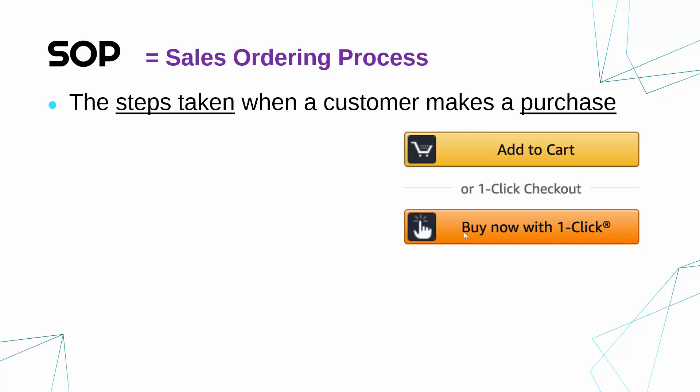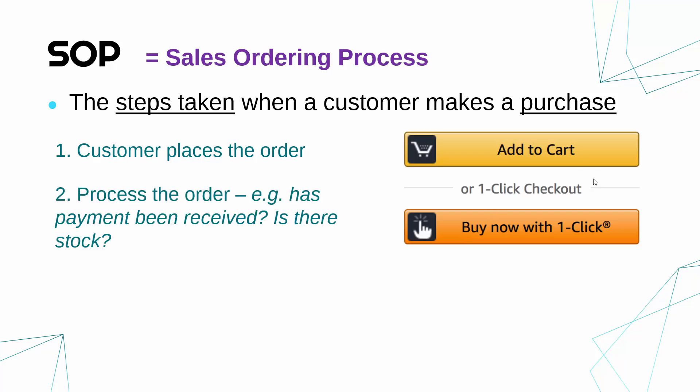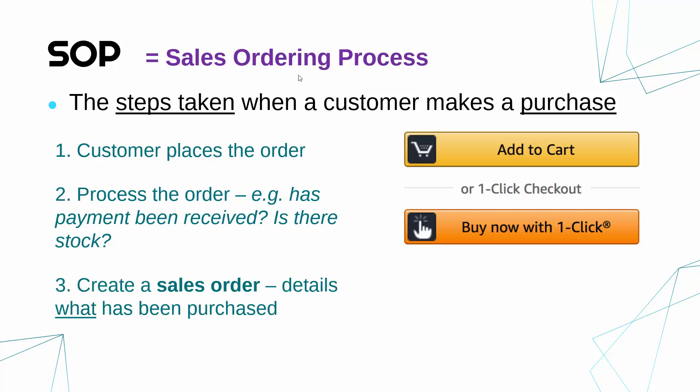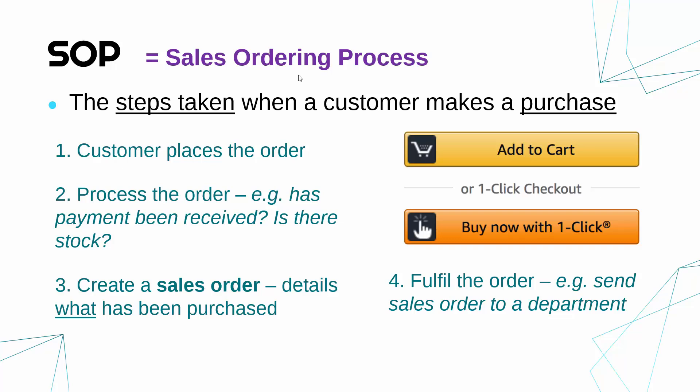The normal steps will be something like this — it can vary depending on the context, but the general steps are: first of all, the customer places an order — they click the button, they do the phone call, whatever it is. The second step is from the company's perspective — the company will process the order, doing some recognition of what the customer is asking for. This might involve checking payment has been received, checking you've got enough stock, or checking that the user is valid or over 18. The next step usually is to create a sales order — some document detailing what has been purchased, what the customer is asking for, and when it needs to be done by if there is a deadline.